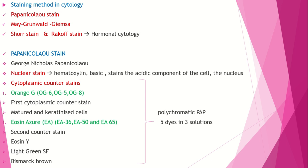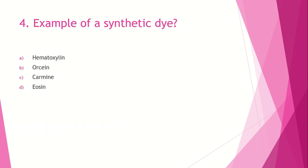Question number 4: Example of a synthetic dye. Option A, hematoxylin; option B, orcein; option C, carmine; option D, eosin. The answer is eosin — it is a synthetic dye. The other three — hematoxylin, orcein, and carmine — are natural dyes because they are extracted from natural sources.